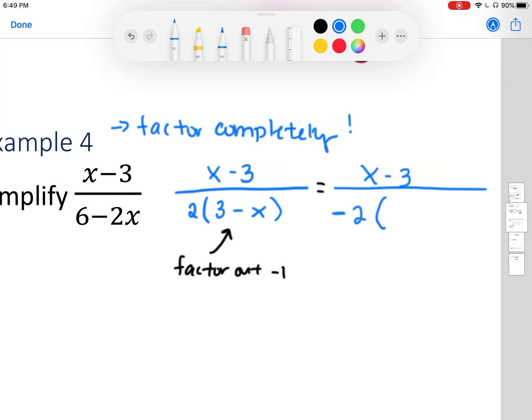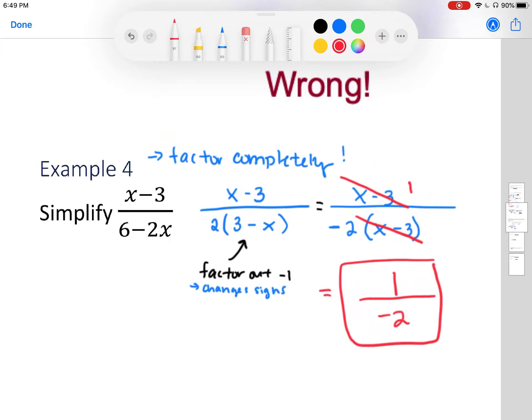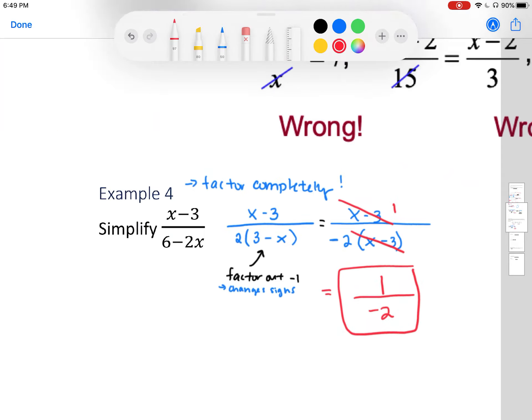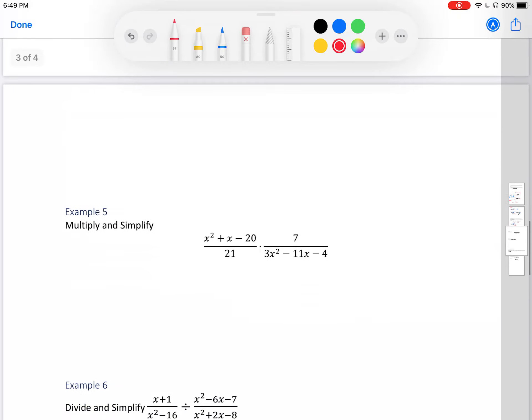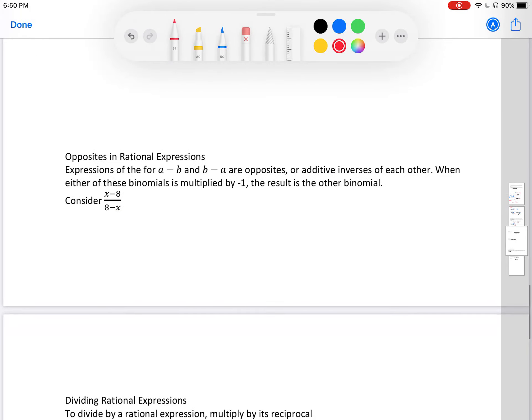All right, so factoring negative 1, it changes the signs. So if I had, think of it as dividing by negative 1. So if I had a positive 3, it's now going to be a negative 3. And if I had a negative x, it's now going to be positive. So now I've reached the order that we want. So now I can cancel that x minus 3. Now, on the numerator, it's not gone. We still have a 1. And our final answer is negative 1 over 2.